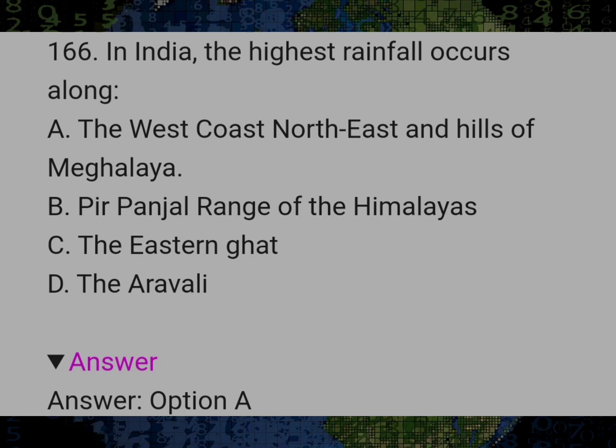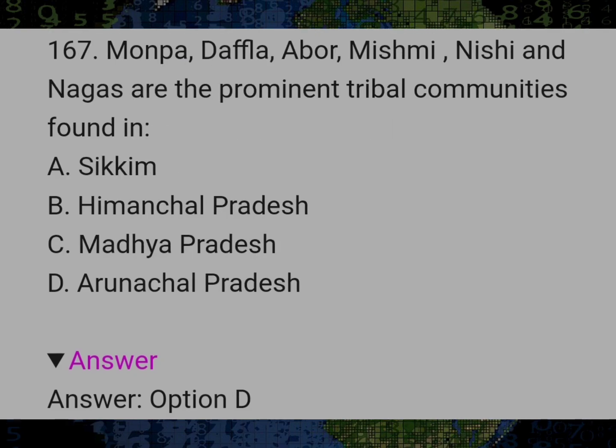In India, the highest rainfall occurs along? Answer A: The west coast, northeast and hills of Meghalaya. Monpa, Dufla, Abor, Mishmi, Nishi and Nagas are the prominent tribal communities found in? Answer D: Arunachal Pradesh.